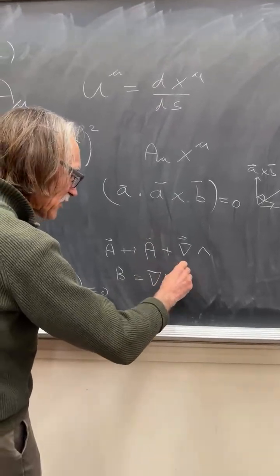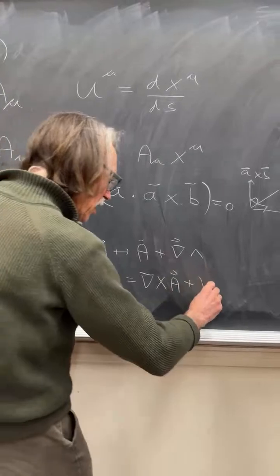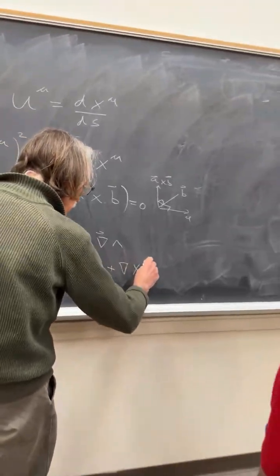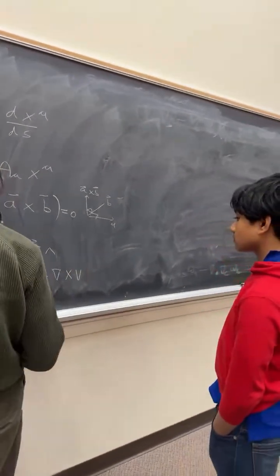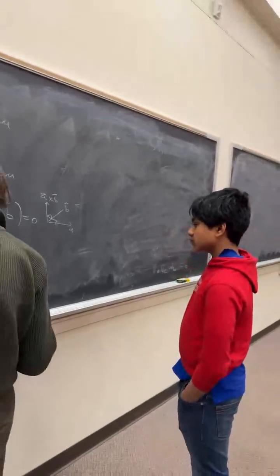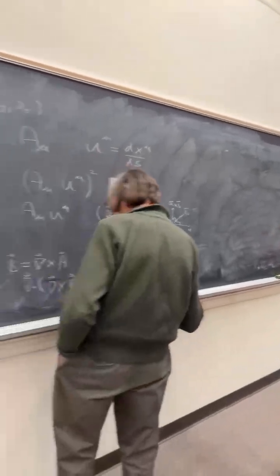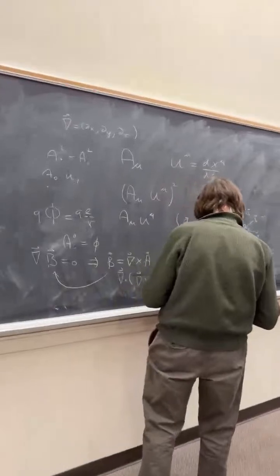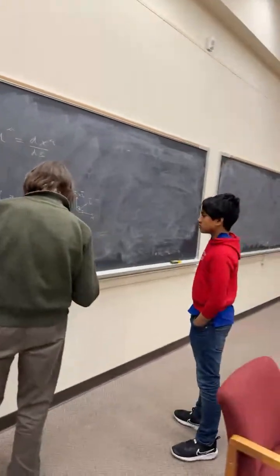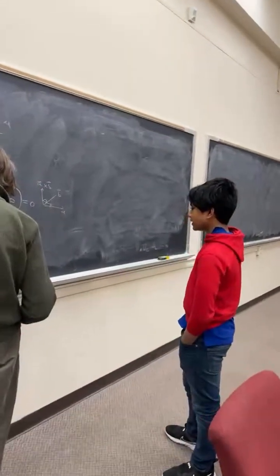Now the curl of A has an additional term, add the curl of the gradient. Sorry, what do I do? Do you see it wrong? The curl of the gradient of lambda.